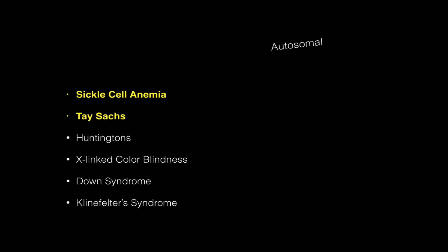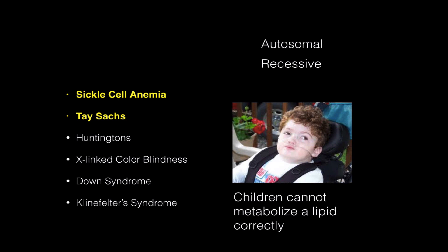Tay-Sachs disease is another autosomal mutation, and it is also recessive, like sickle cell anemia, but it causes a change in a gene that produces an enzyme that allows the body to metabolize a certain lipid that's used in brain tissue. Kids that are born with Tay-Sachs are unable to metabolize this lipid, and it builds up slowly in their brains and usually causes death within two years.